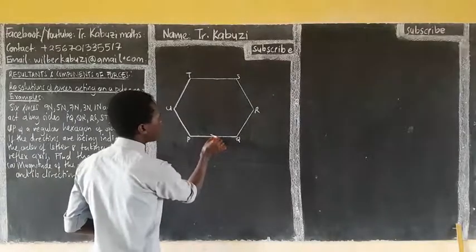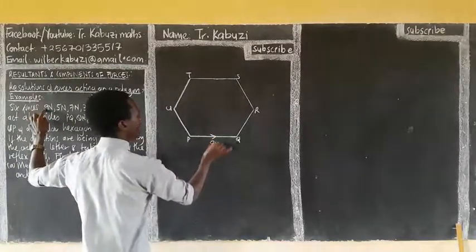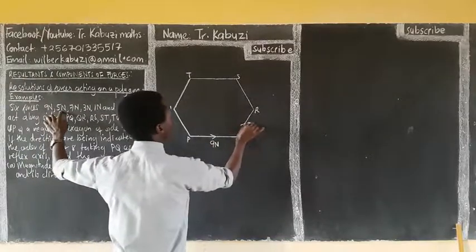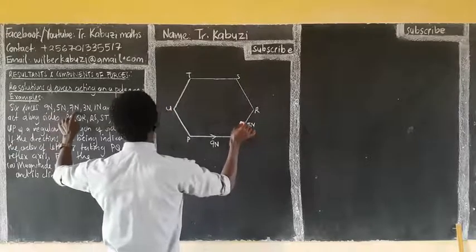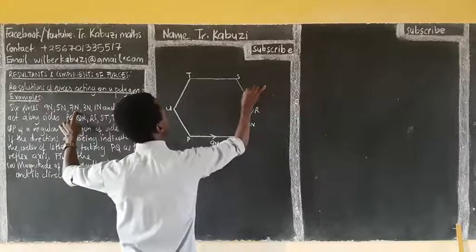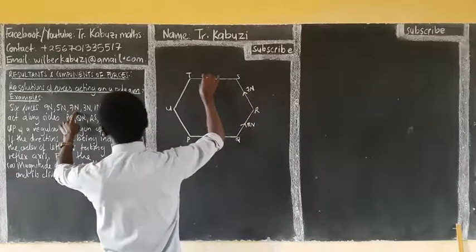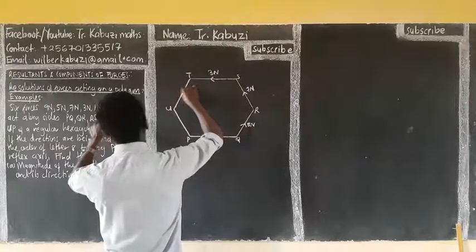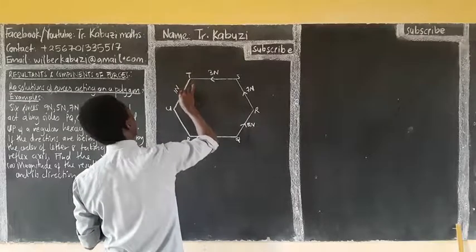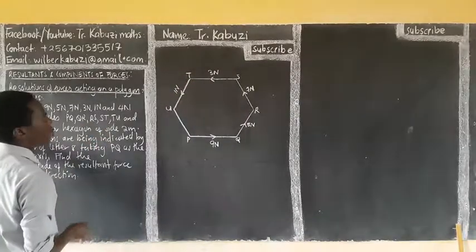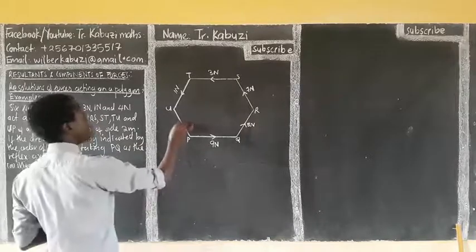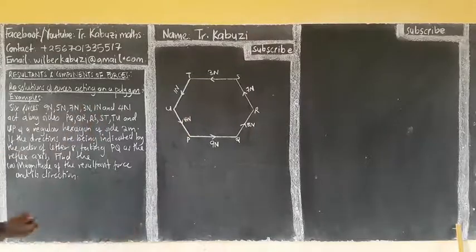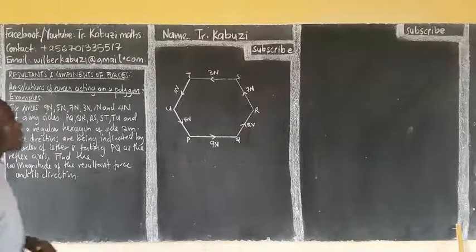PQ has an external magnitude of 9 newtons. Then QR — the magnitude is 5 newtons. Then RS — the magnitude is 7 newtons. Then ST — the magnitude is 3 newtons. Then TU — the magnitude is 1 newton, TU direction indicated. Then UP — they are giving us 4 newtons. So that is our UP, 4 newtons. From there, they are asking us to get the resultant and the direction.